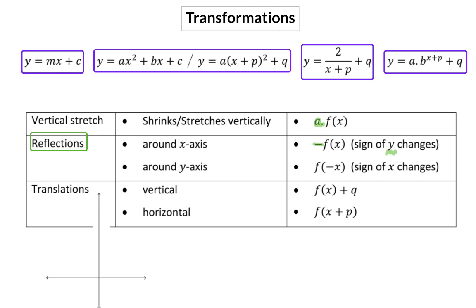Next, a reflection around the y-axis can also happen, which means everything to the left of the y-axis is reflected to the right and the other way around. Here, the sign of x will change, which means for the equation that in the bracket we multiply x with a minus.